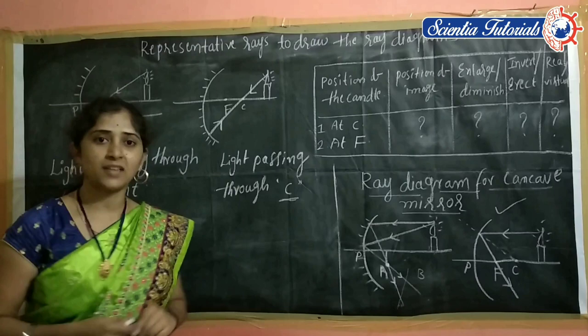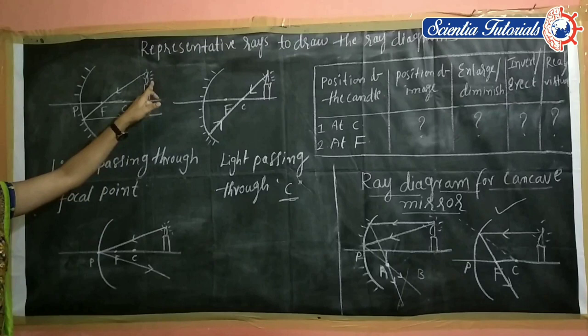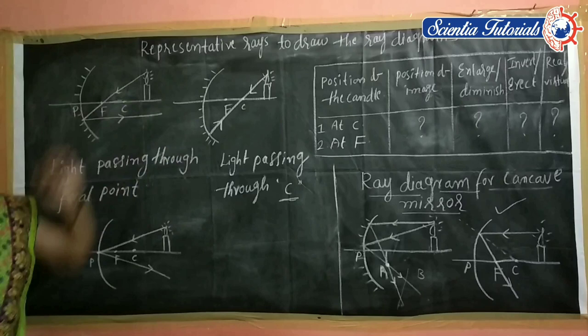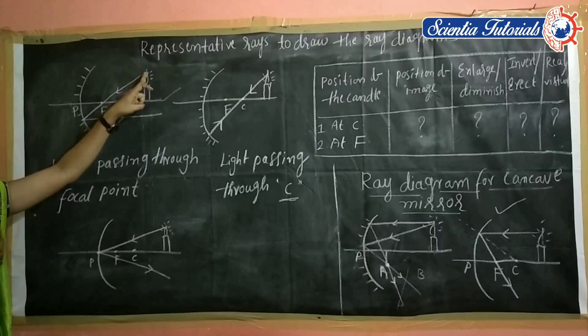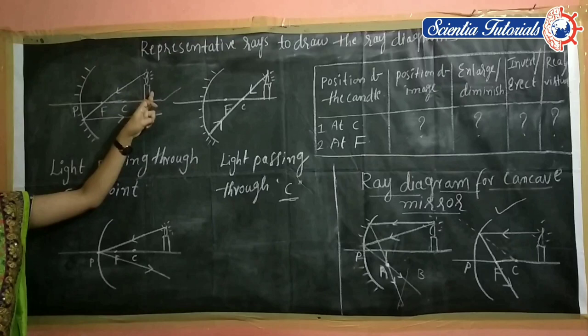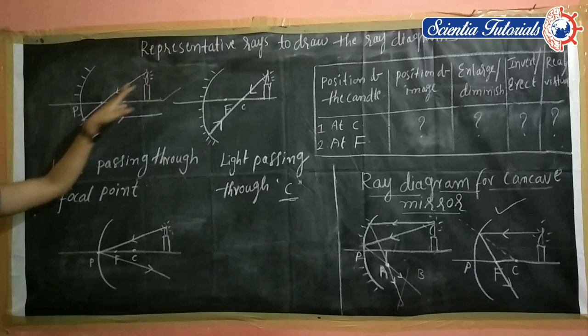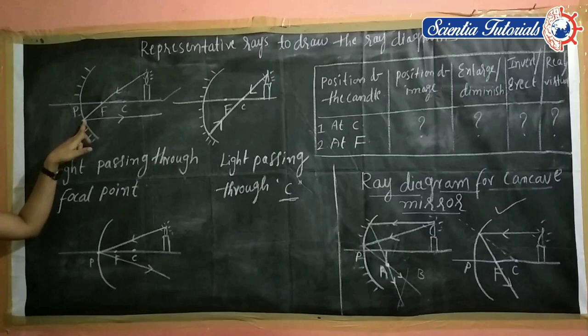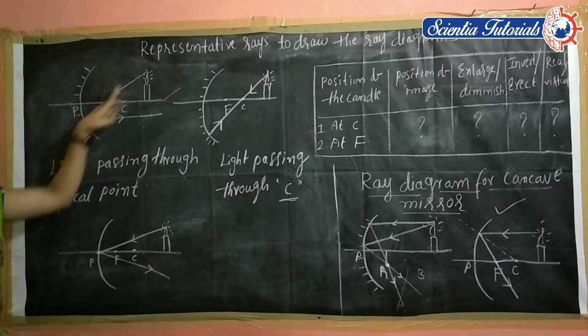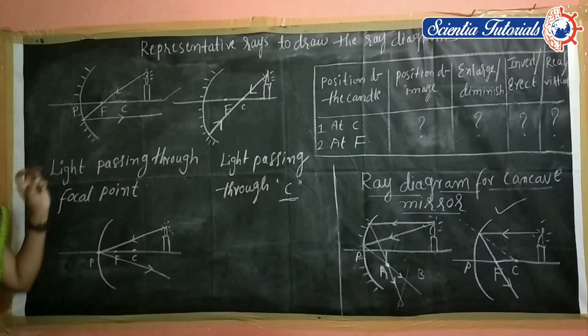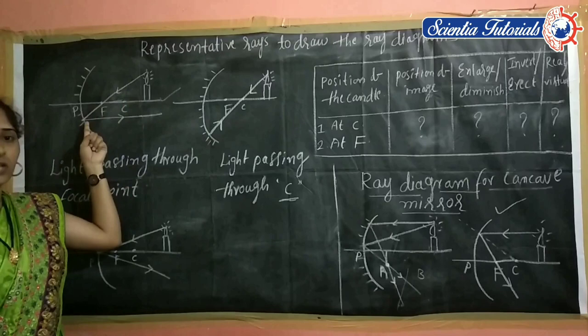The light ray which is passing through the focus reflects parallel to the principal axis. This is the principal axis, and here are the focus, center of curvature, and pole. The light ray coming from the object in front of the concave mirror, passing through the focus and falling on the concave mirror, after reflection it travels parallel to the principal axis. This is one of the representative rays — a ray passing through the focus can be taken as a representative ray to draw the ray diagram.